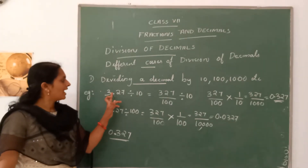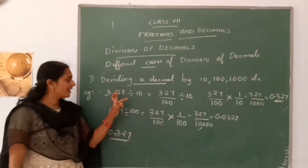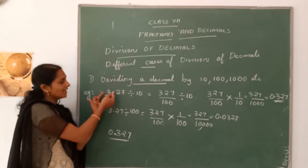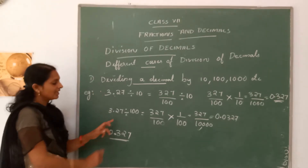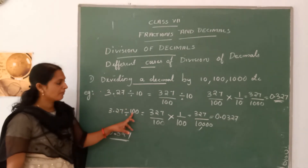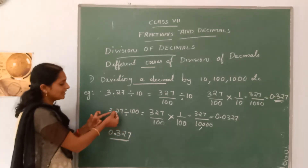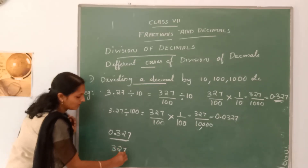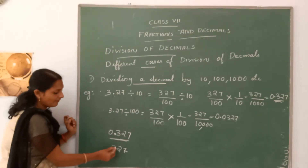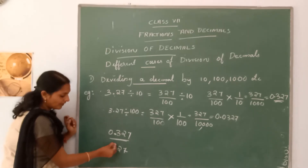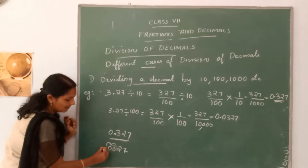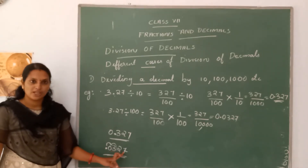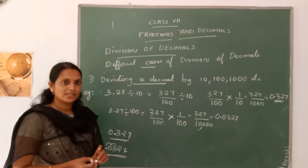When dividing by 10, there is one zero, so the decimal moves right to left 1 digit. When dividing by 100, there are two zeros, so the decimal moves right to left 2 digits. Write the number 327 and move the decimal two places to the left — you put a zero in, giving the quotient 0.0327. Hope you understand.